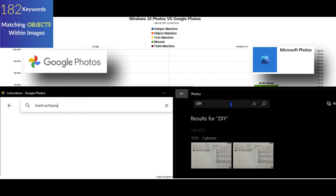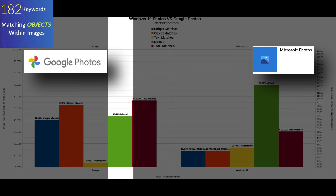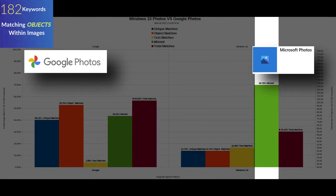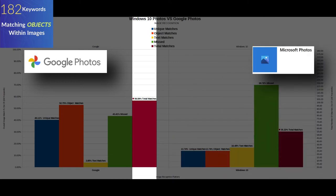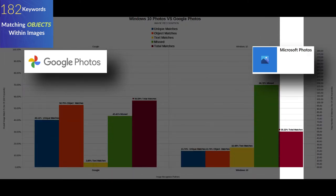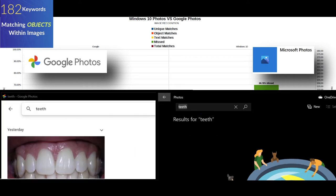Summing up the image object recognition data: in the green column, Google didn't return any result 43.42% of the time, while Windows 10 returned nothing 69.78% of the time. In total matches, Google found an image result 56.59% of the time versus Windows 10 at 30.22% — confirming Google does a much better job identifying objects within images and associating them with search keywords.